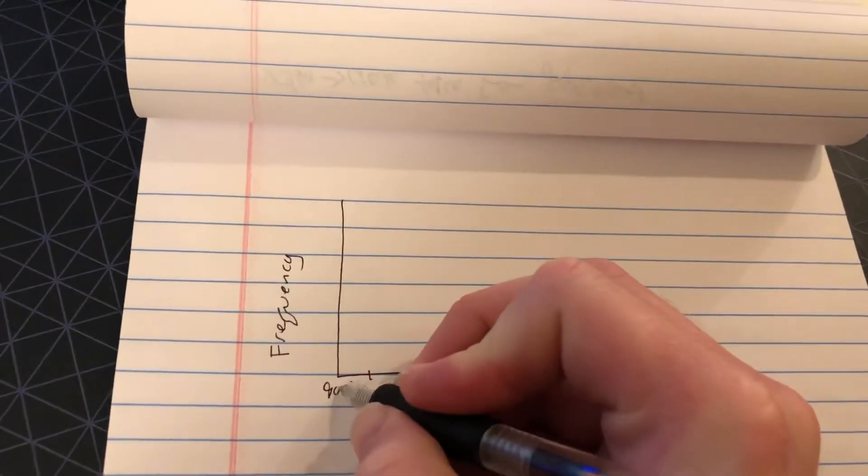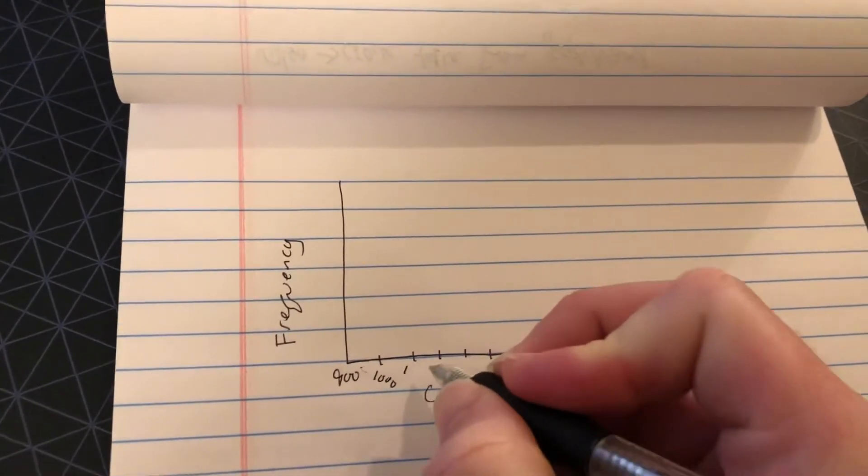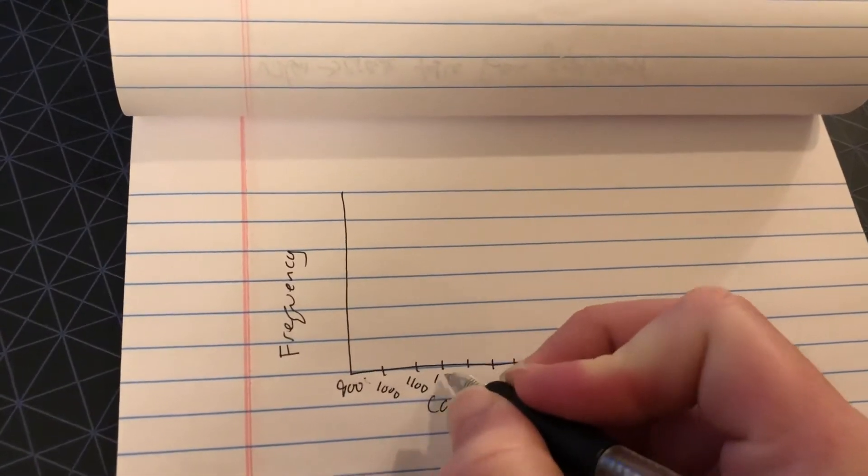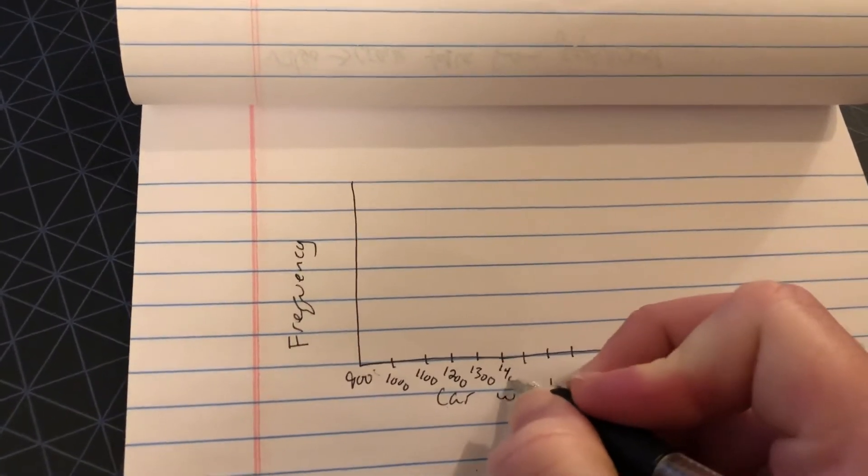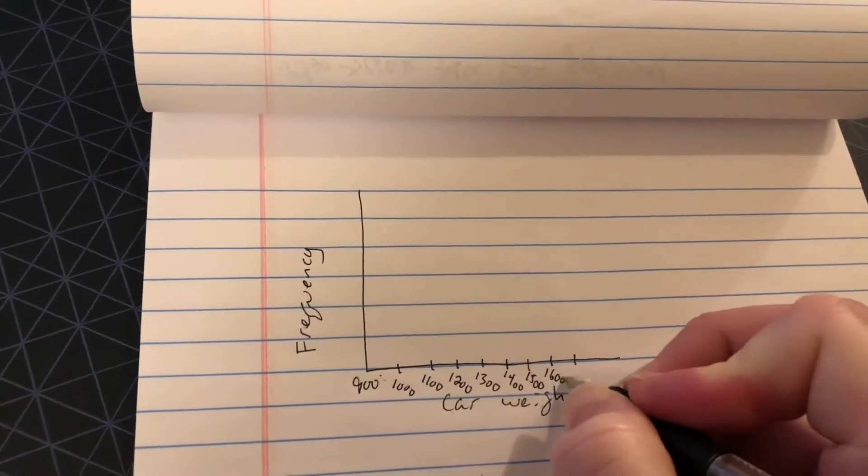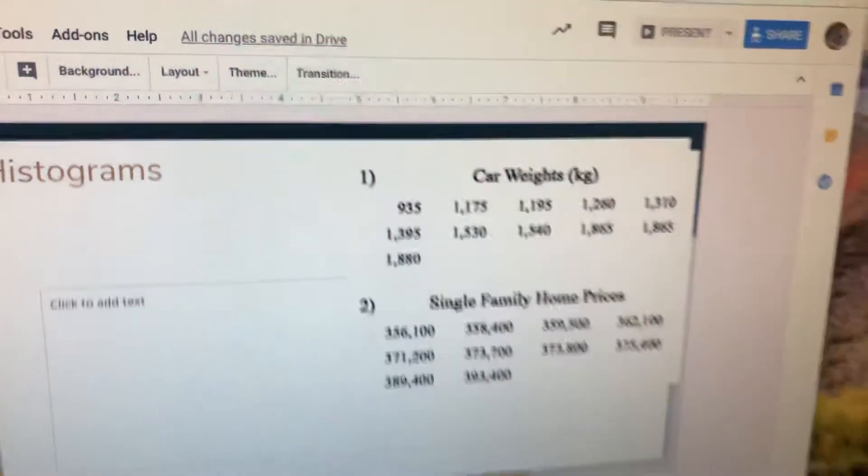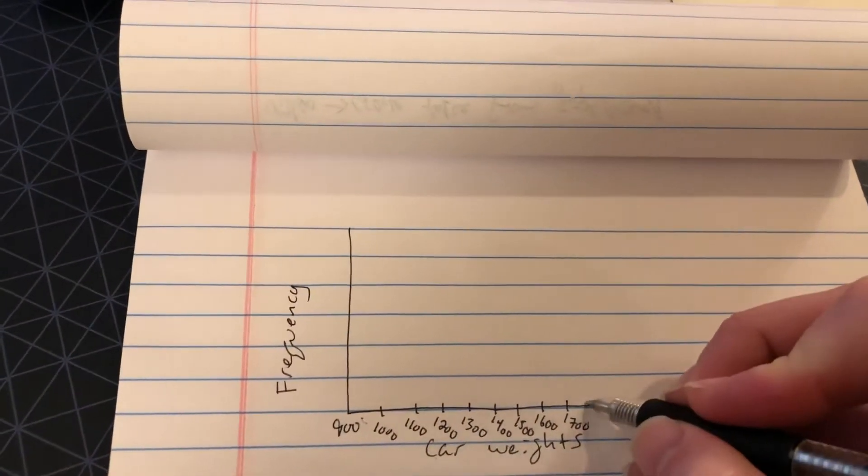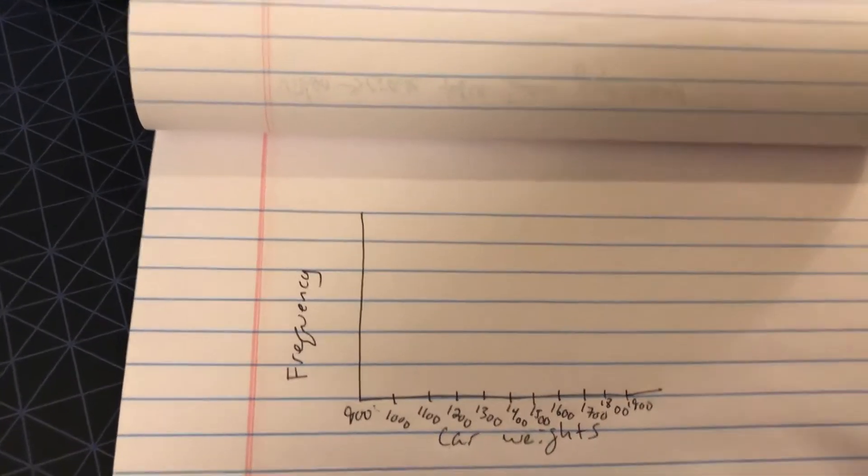I'm going to start at 900, and I'm going to go up by 100s here. 1,000, 1,100, 1,200, 1,300, and continue on. You guys can choose your own. Now I see here it stopped at 1,700, but after I look at my numbers, my biggest number goes up to 1,800. So I need a couple more here. I'm making 1,800, and one last one at 1,900.